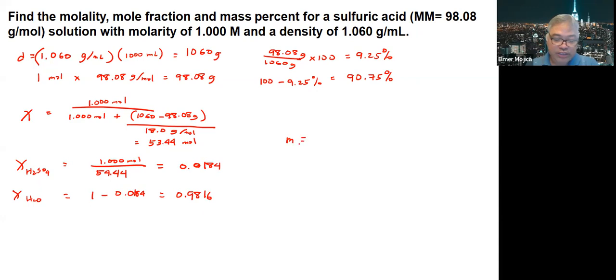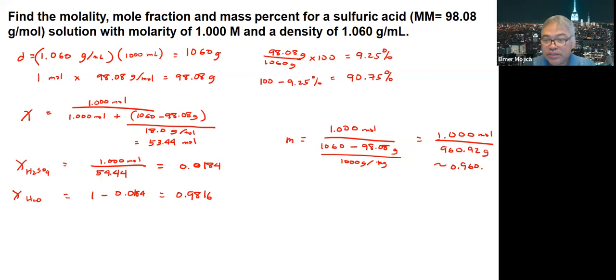Now for the last that we have here, which is molality, so we have here 1 mol from the 1 molar. So in 1 liter, we have 1 mol. And we have here the amount that is 1060 minus 98.08, and then you divide it by 1,000 grams per kilogram. So you will get here, if I'm not mistaken, so if you have it like this, so this is around 960.92 grams or 0.96092 kilograms. And this will give you around 1.041.